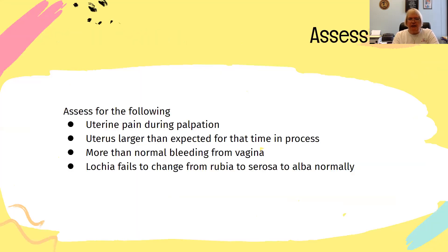For assessment, I need to assess for uterine pain while palpating. The uterus is larger than expected for that time in progress. There is more than normal bleeding from the vagina, and the lochia fails to change from rubra to serosa to alba.